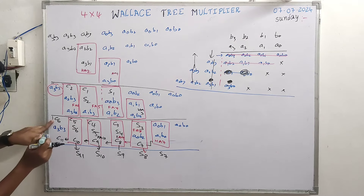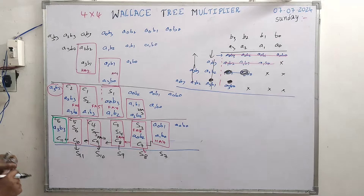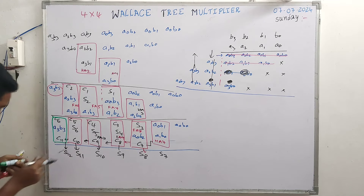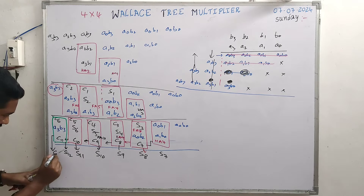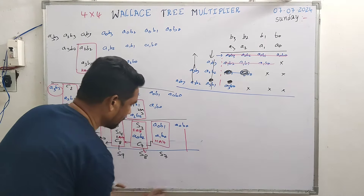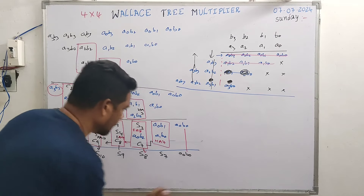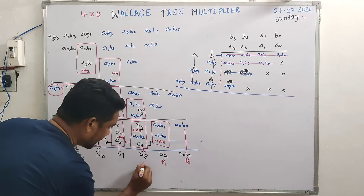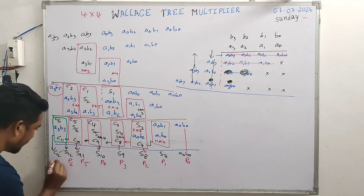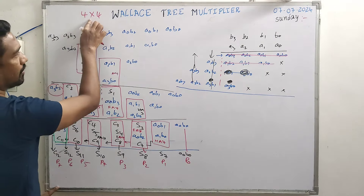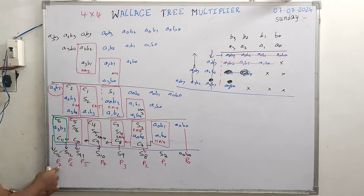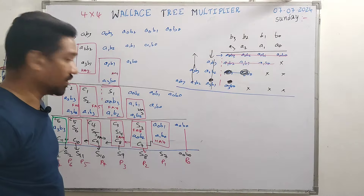Another full adder FA12 produces sum S12 and carry C12. The final outputs are: A0·B0 = P0, then P1, P2, P3, P4, P5, P6, and P7. For an N×N multiplier it produces 2N bits, so a 4×4 multiplier produces 8 output bits P0 through P7. This is how the Wallace Tree multiplier works.